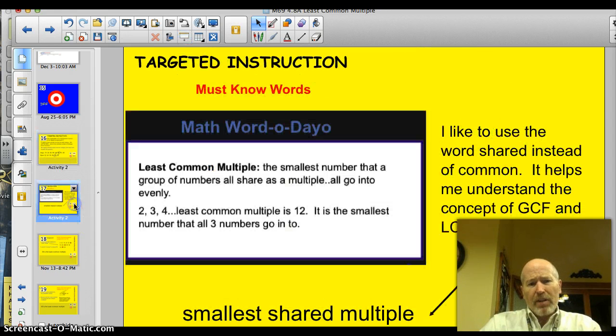Alright, let's take a look at the definition of least common multiple. The smallest number that a group of numbers all share is a multiple, or all go into evenly. For example, 2, 3, and 4. The least common multiple of these is 12. That's the smallest number that all three numbers go into. I like to use the word shared instead of common. It kind of helps me understand these terms of GCF, greatest common factor. I think of it as the greatest shared factor. Remember we talked about that concept earlier? And LCM, least common multiple. I like to think of it as the smallest shared multiple. So hopefully that word common, if you think of it as shared, that'll help you too.